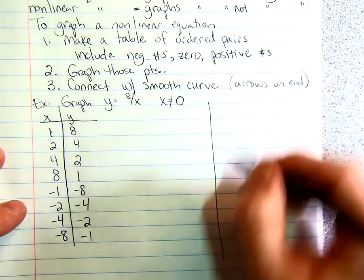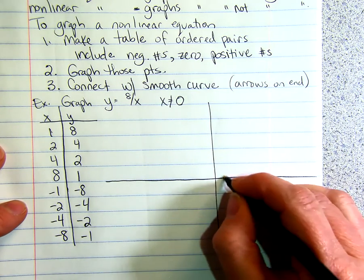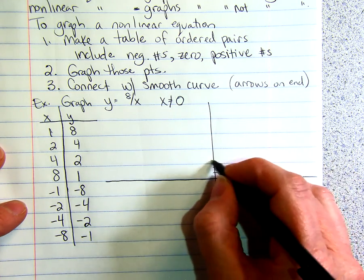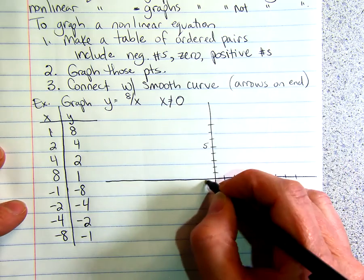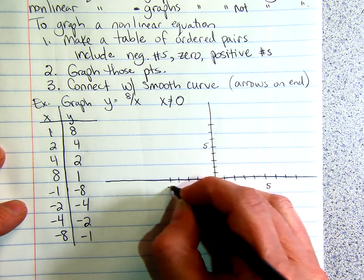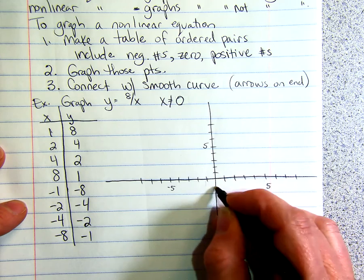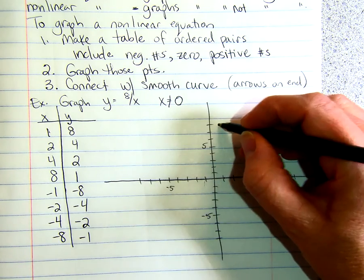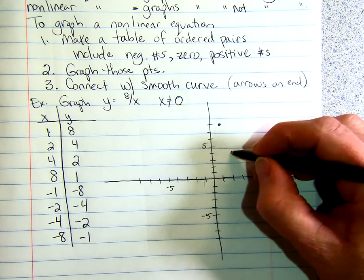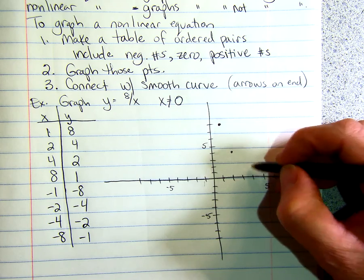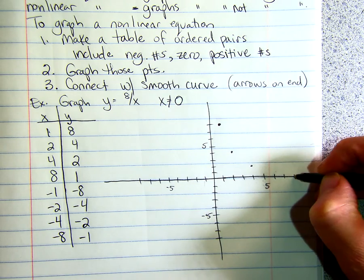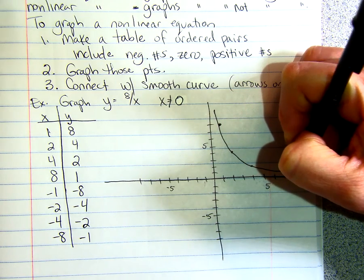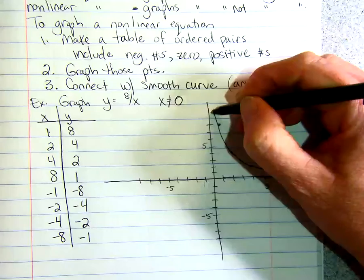When we graph this, we need to go up 8, right, and left 8, down 8. So we go over 1 and up 8, over 2 and up 4, over 4 and up 2, over 8 and up 1. So this is what our smooth curve is going to look like. And we just put arrows to show that it's going to continue on.